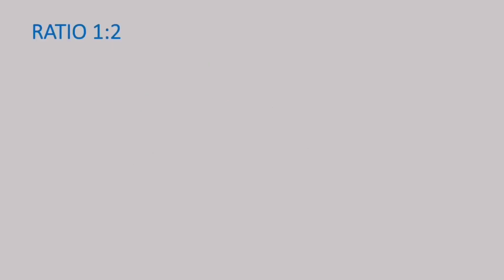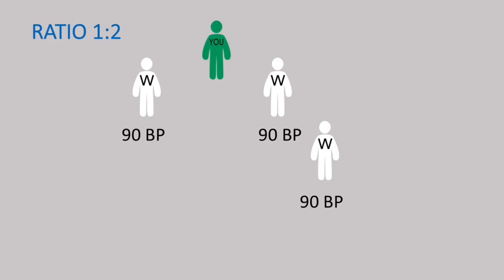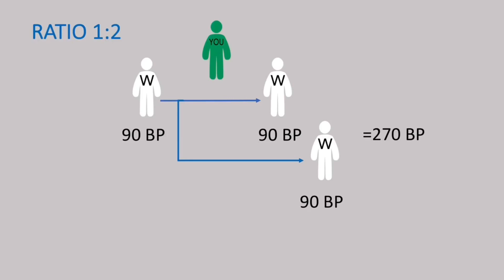Now the 1 to 2 ratio. This is you — you invite one white package on your left and two white packages on your right, each getting 90 binary points. The 1 to 2 sum gives a total of 270 binary points, or 27 euros.